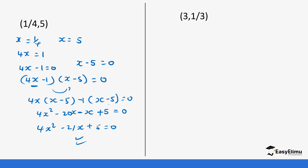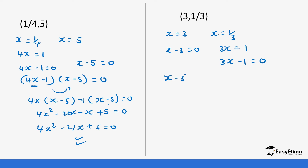Finally we have this question: x equals 3 and x equals one third. So x minus 3 equals 0, and 3x equals 1, so 3x minus 1 equals 0. This is the same as (x minus 3) times (3x minus 1) equals 0.